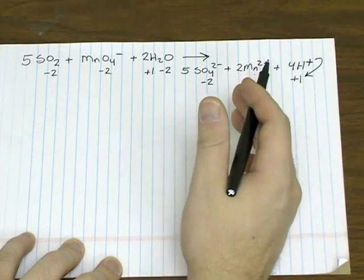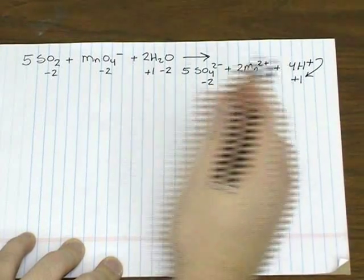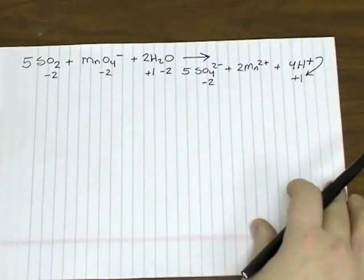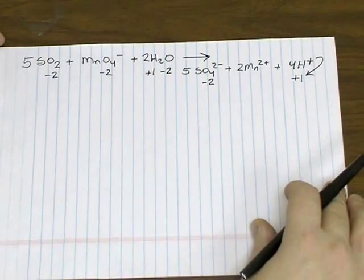So if this is a redox reaction, then sulfur and manganese should show the loss or the gain of electrons.